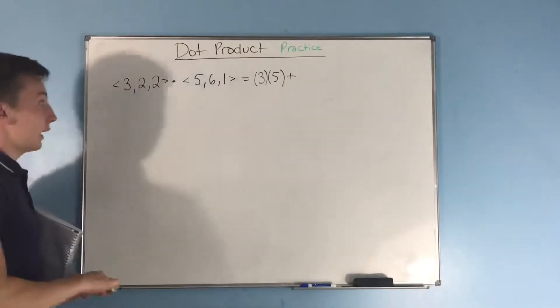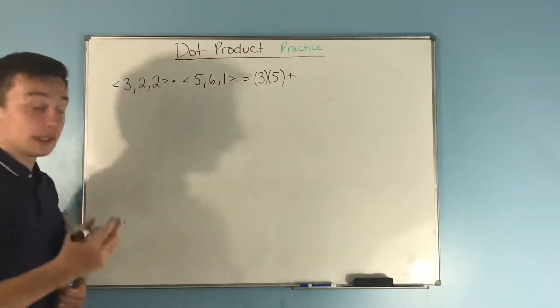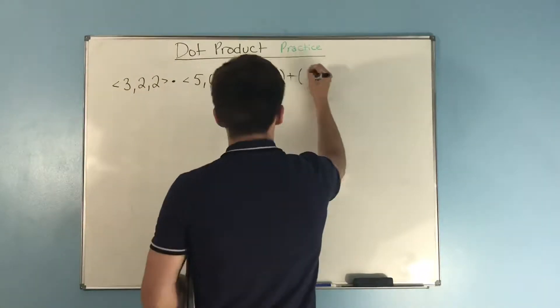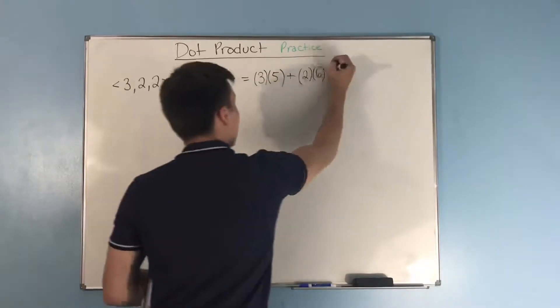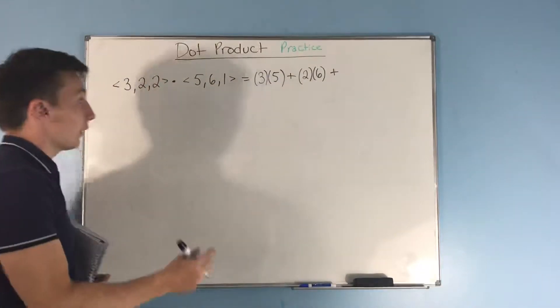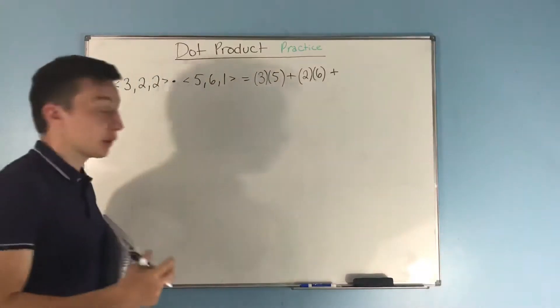Then, we're going to add that to our next set of components multiplied together, which is 2 and 6. Next, we're going to add that to our last set of components, which is 2 and 1. We're going to multiply them together.